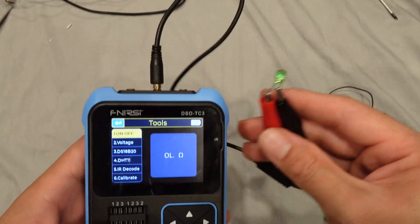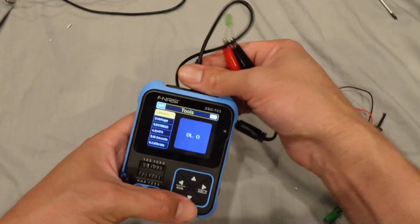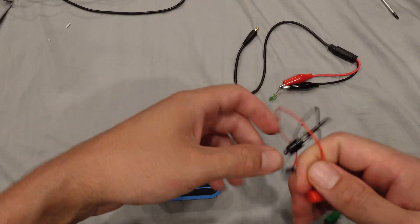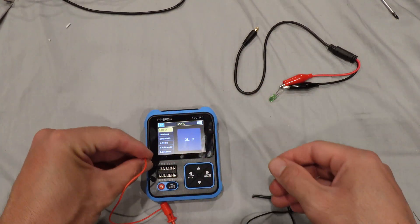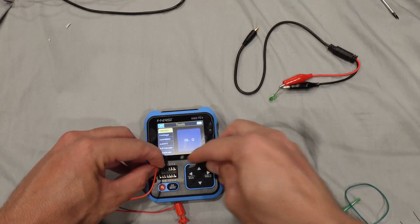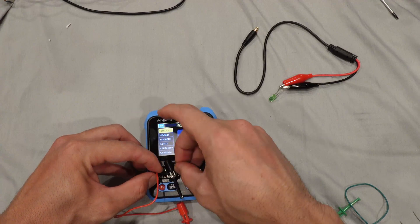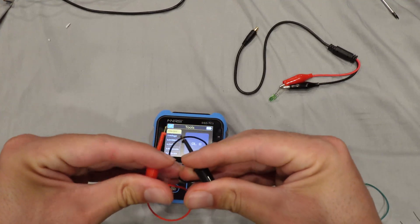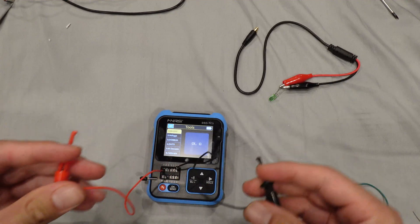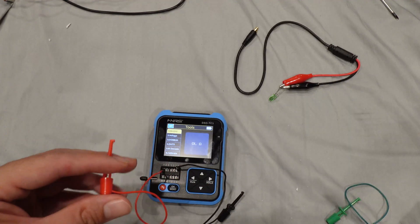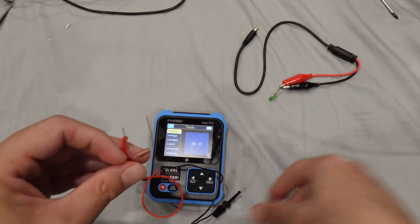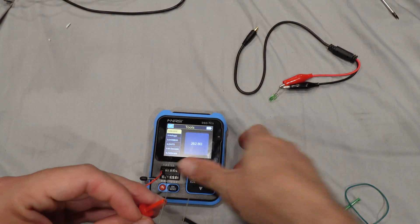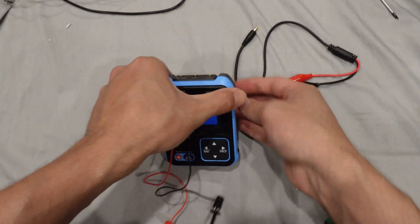You can also go to tools, and for this on-off, which I think should be continuity, we can use these probes again, just like that. And you can also measure the resistance, just like that.